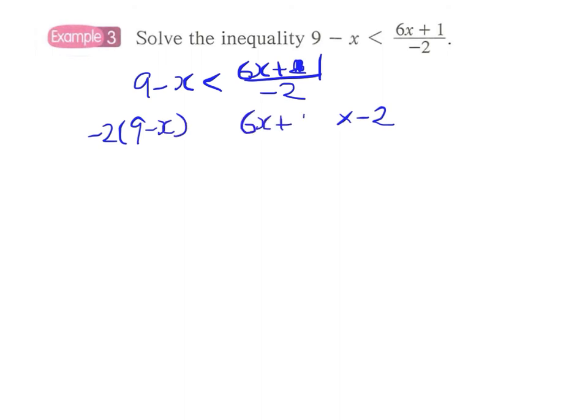We have minus 2 times 9 minus x on the left hand side and 6x plus 1 on the right hand side. But since this is a negative number, we have to change or reverse the direction of the inequality sign, so this will be greater.